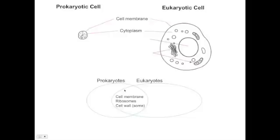We'll also see if we look at the Venn diagram on the bottom, the prokaryotes and eukaryotes both have ribosomes. All cells have ribosomes. Ribosomes are the structures inside cells that make proteins and all cells need to make proteins.